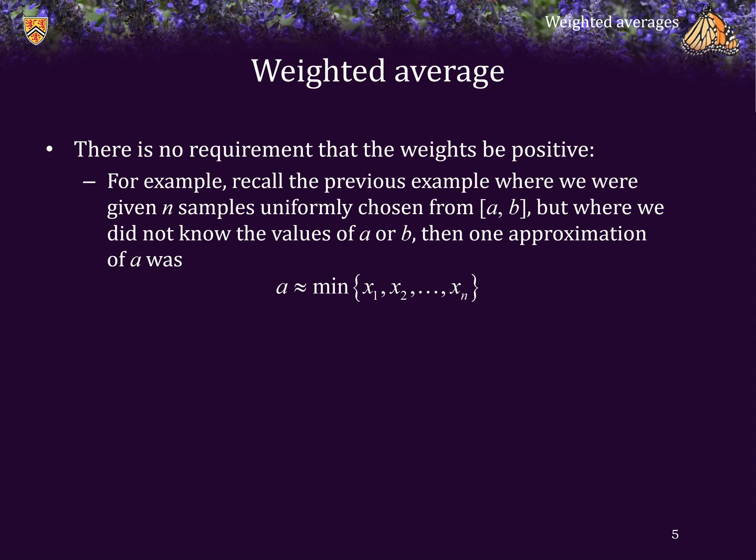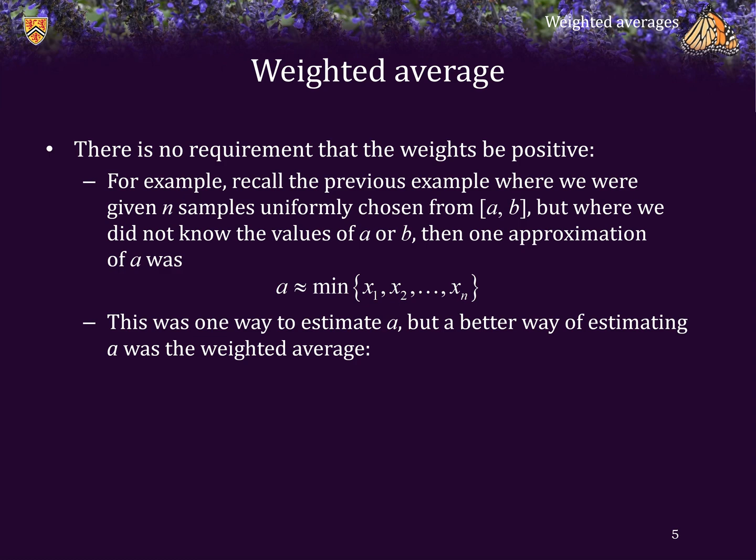For example, given n samples uniformly chosen from the interval a to b, where we do not know what the values of a or b are, one approximation of the lower bound was the minimum of these X values. But a better way of estimating a was a weighted average of the min and the max. If we took n times the minimum value minus the maximum value and divided by n minus 1, we saw this was a better approximation of the lower bound a.